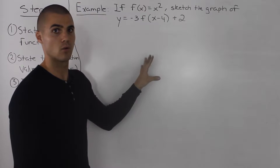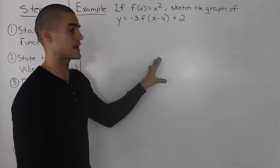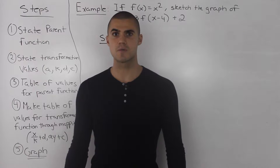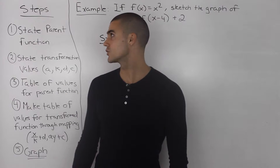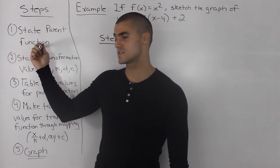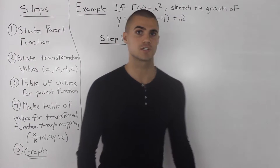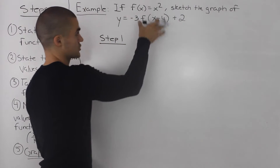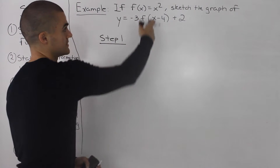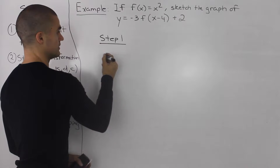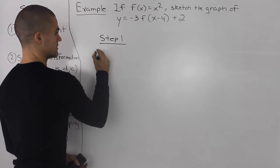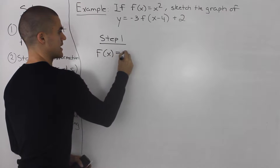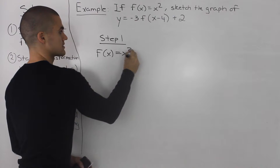You need to recognize what form the question is taking before starting. Step 1 in the graphing process is to state the parent function. Because the parent function and transformations are separated here, it's easy to see that the parent function is x squared.